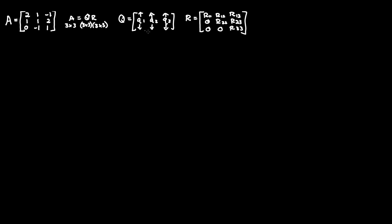To find Q, we're going to have to find the projections. I'm not going to go too much into theory, just the application. Starting with Q1, it equals A1 over the magnitude of A1, where A1 is column 1 of matrix A. I'll call column 2 A2 and A3 respectively. A1 is simply 2, 1, 0 (as a column vector).